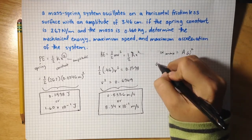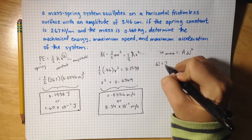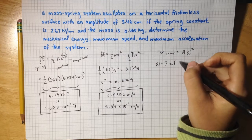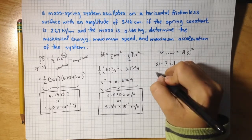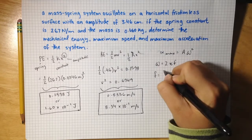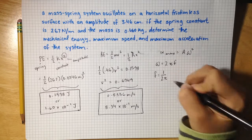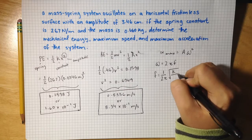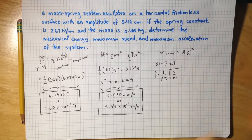So the angular frequency is equal to 2 times pi times the frequency, and we have to figure out the frequency first. The frequency is equal to 1 over 2 pi times the square root of the spring constant divided by the mass of the spring.